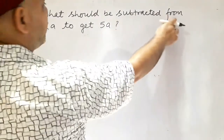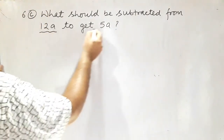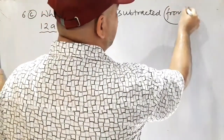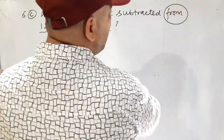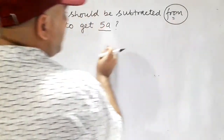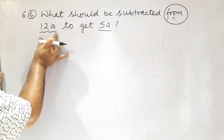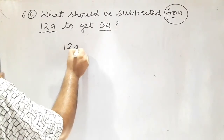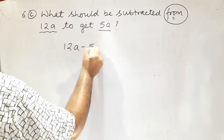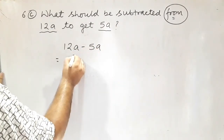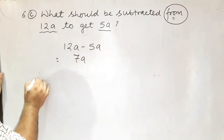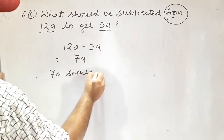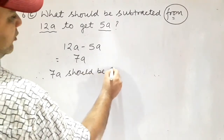What should be subtracted from 12a to get 5a? When the word 'from' is given, we take that term first. So: 12a minus the unknown equals 5a. We write: 12a minus 5a equals 7a. Therefore 7a should be subtracted.